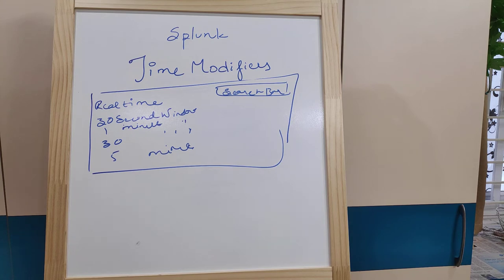In real-time, we can search for the last 15 minutes, last 16 minutes, last 4 hours, last 24 hours, last 7 days, and last 30 days. These options are very important.